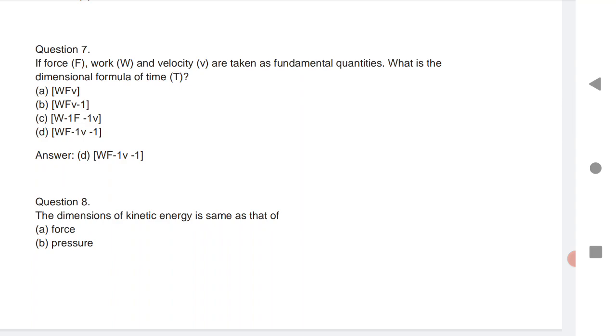Next is 7th question. If force, work and velocity are taken as fundamental quantities, what are the dimension formula for time? F W F power minus 1 V power minus 1 is the formula.